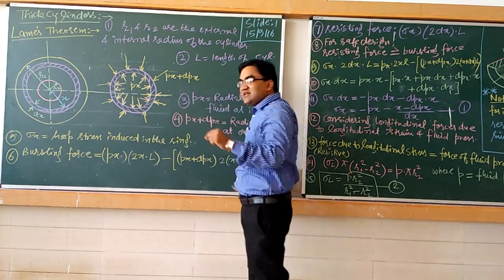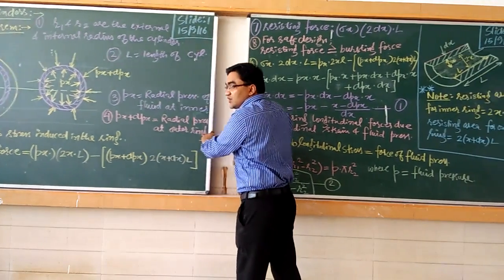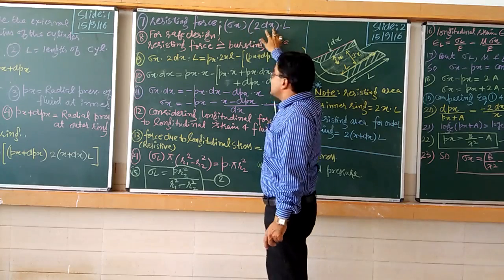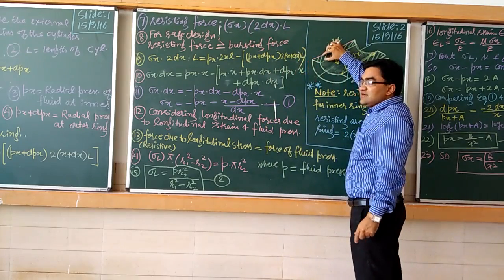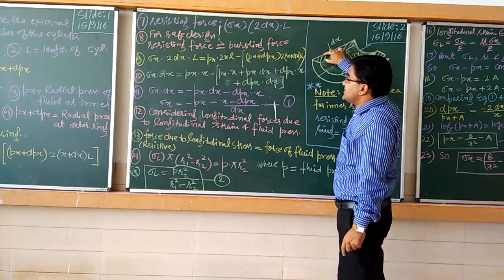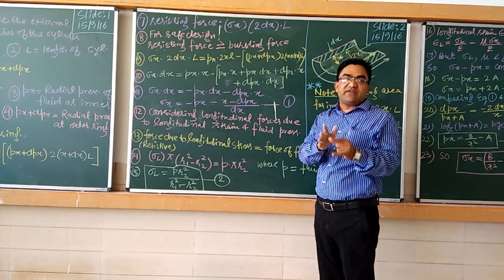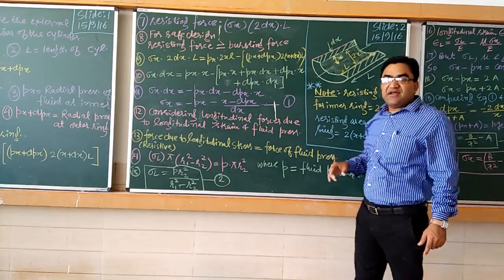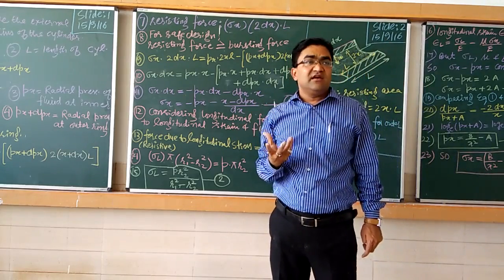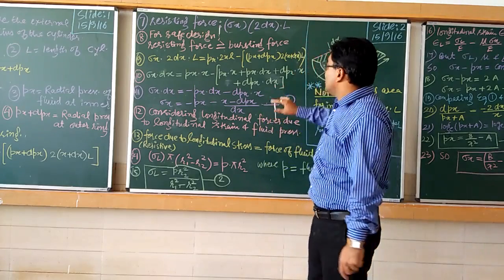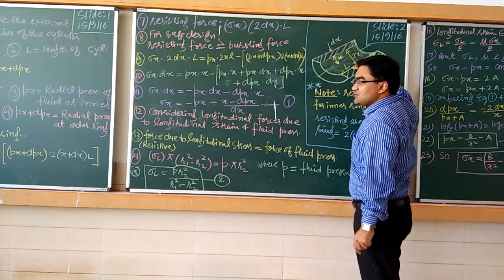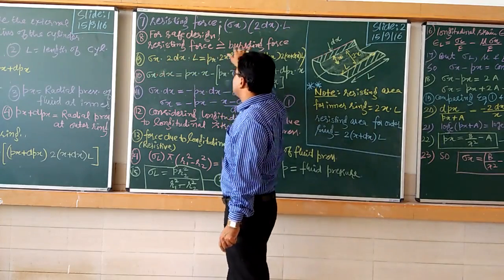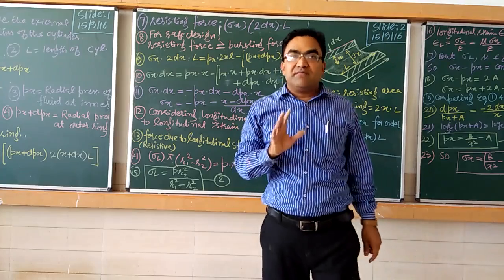The resisting or existing force will save the cylinder from bursting. The resisting force equals sigma_x into 2dx into L, where dx is the thickness of the material which is resisting. So sigma_x into 2dx into L is the resistive force, and this must be greater than or equal to the bursting force for the cylinder to be safe. We are taking the condition of at least equal to.